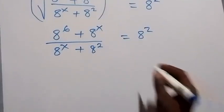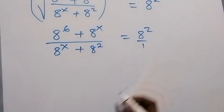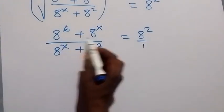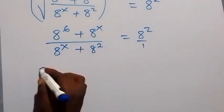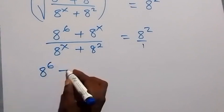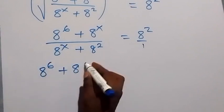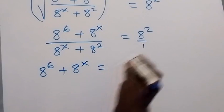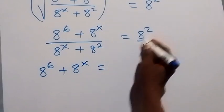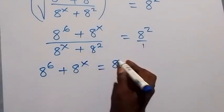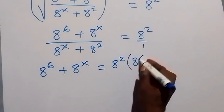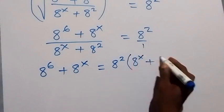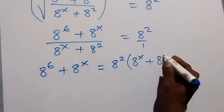In the next step, we can cross multiply from here. This we multiply once, still remains the same as 8 raised to the power 6 plus 8 raised to the power x. Then, equals to 8 squared, we multiply this, we have 8 raised to the power 2 into bracket, 8 raised to the power x plus 8 raised to the power 2.